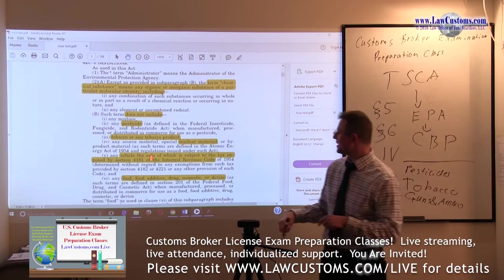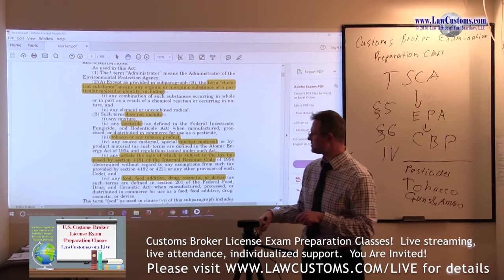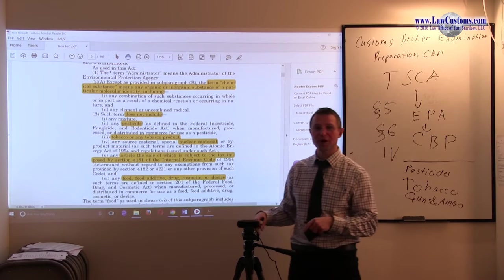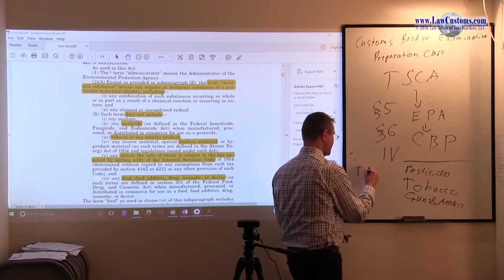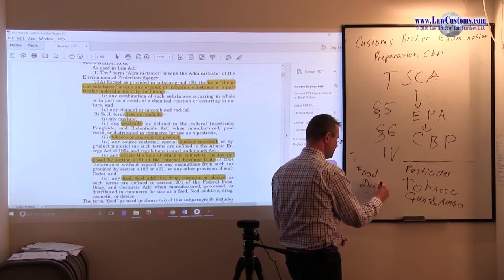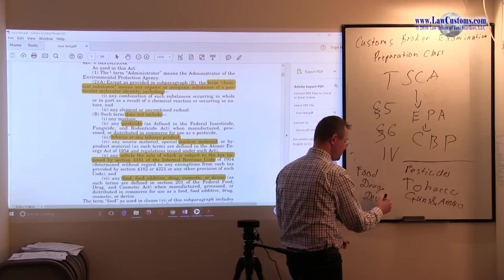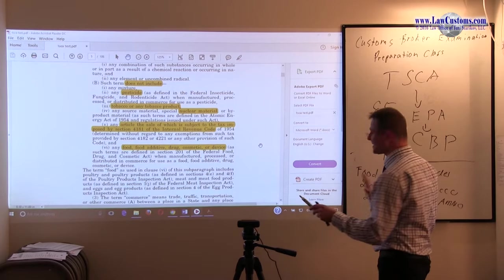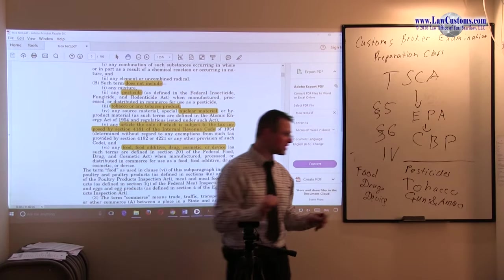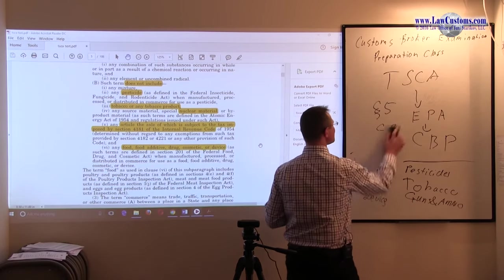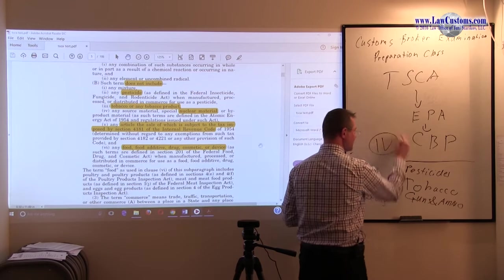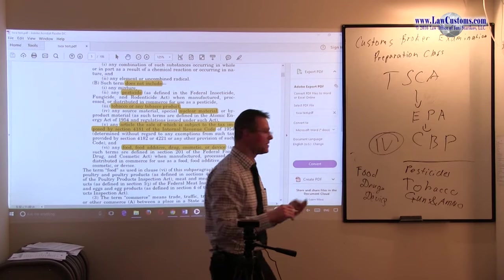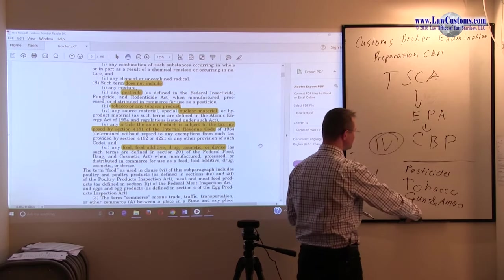Then we have FDA stuff: food, food additives, drugs, cosmetics, or devices. If it's any of those, it's outside of Toxic Substances Control Act. Also, Title 7 covers lead products like lead paint. Chemicals containing lead are regulated separately because lead has been found to be unhealthy for human beings.